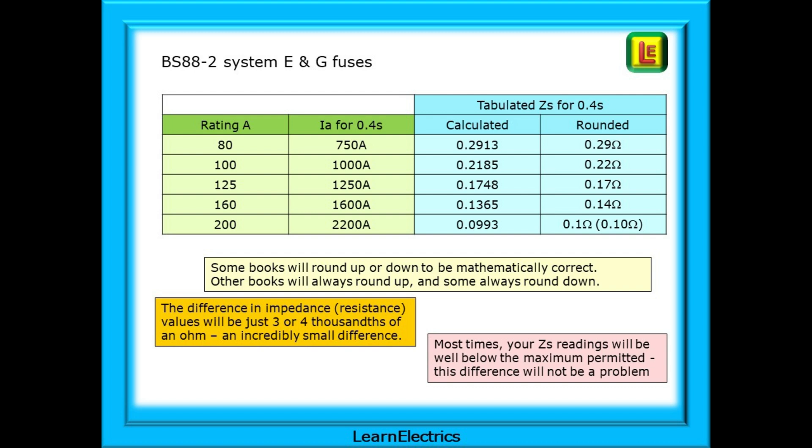Here are the answers. I've put them into a small chart for ease of understanding. Hopefully, your answers have come pretty close to mine. Some books will round up or down to be mathematically correct, while other books will always round up, and then again, some books will always round down. The difference in impedance or resistance values will be just three or four thousandths of an ohm, an incredibly small difference. Most times, your ZS readings will be well below the maximum permitted, and this difference will not then be a problem to you.